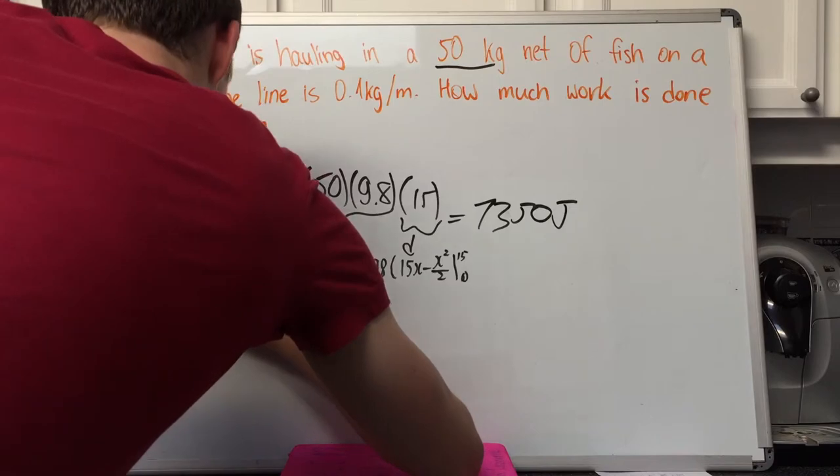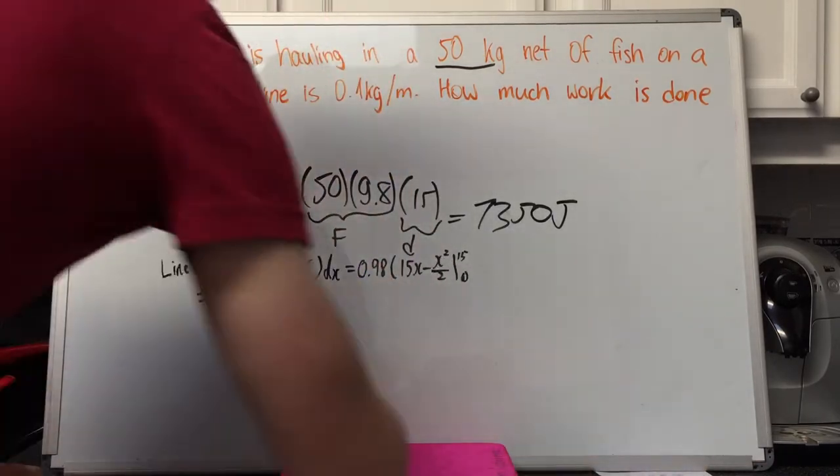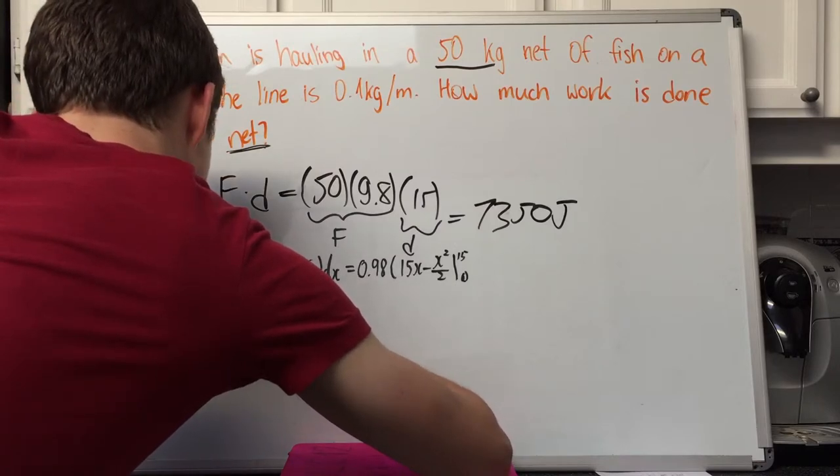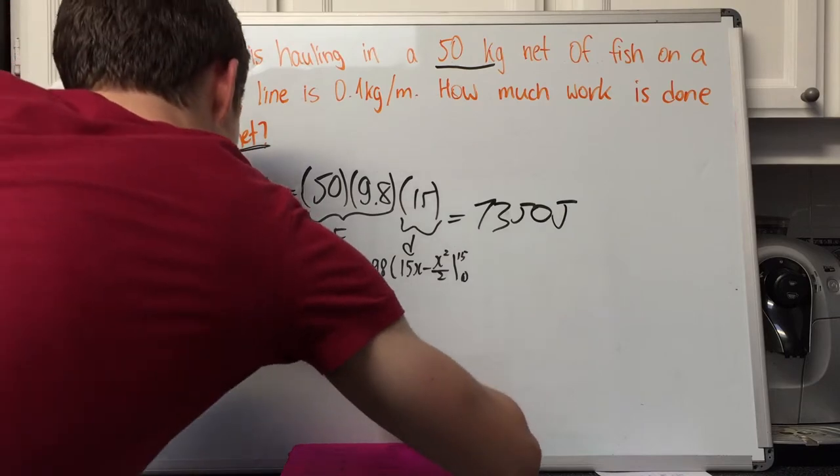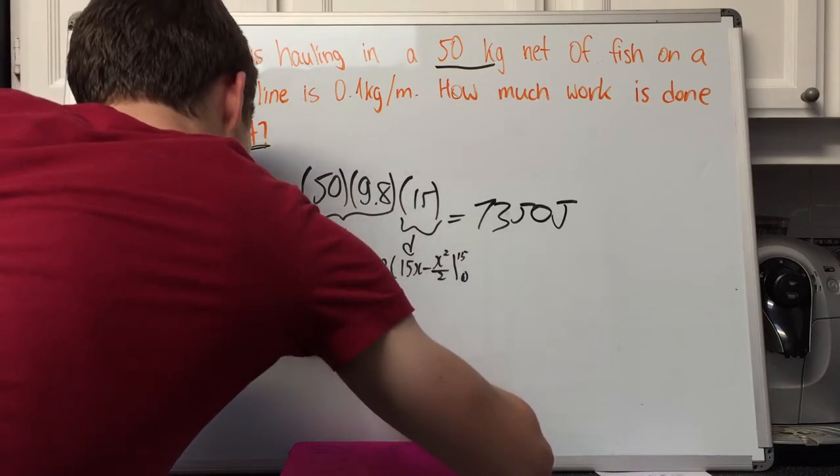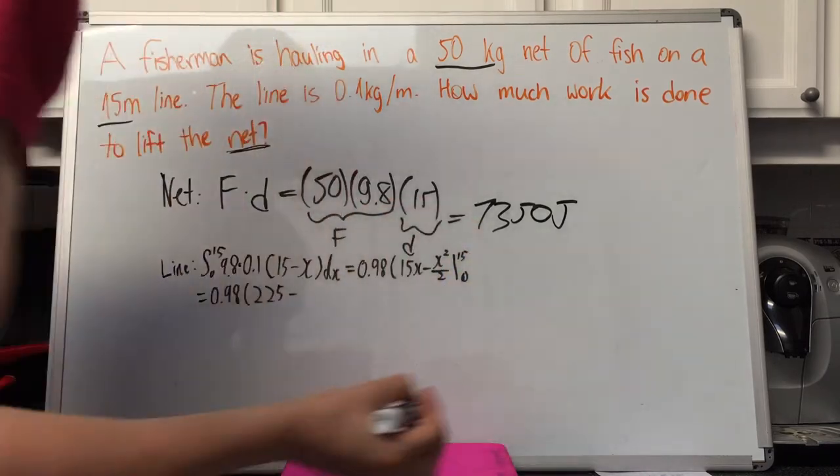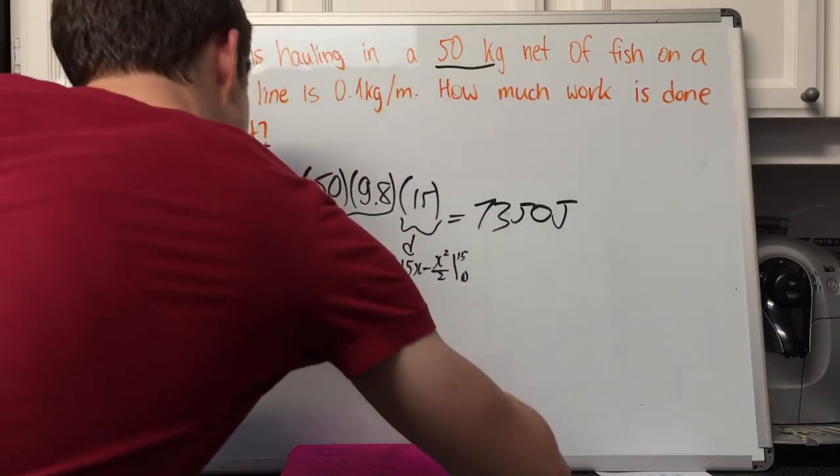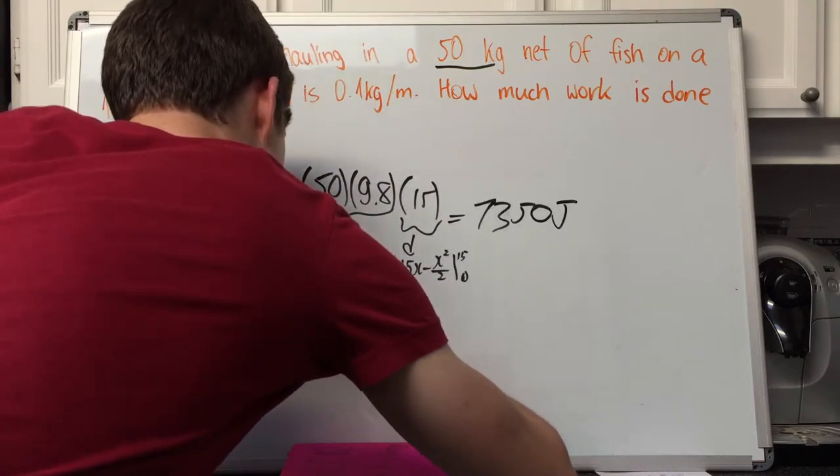Now we substitute that in and solve. We end up with 0.98 multiplied by 15 times 15, which is 225, minus 15 squared over 2, which is 112.5.